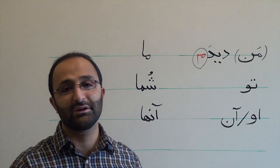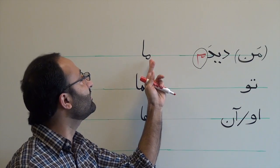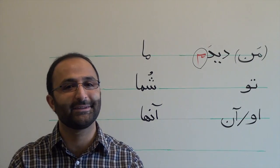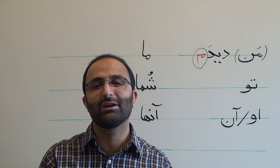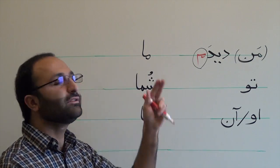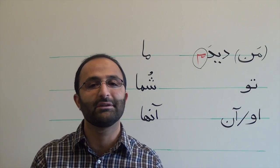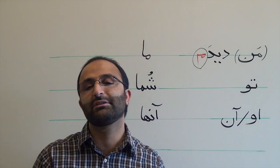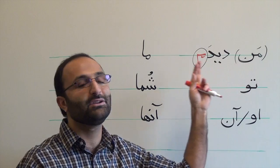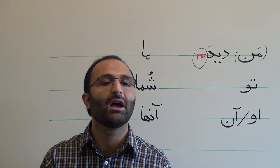Another thing about subjective pronouns is the pronoun 'ma.' If you have a Persian friend, you will see that he uses 'ma' a lot — more than enough. The reason is that in Farsi, using 'ma' instead of 'man' is the sign of humbleness. So many times in Farsi, people refer to themselves using 'ma' instead of 'man.' Instead of saying 'man didam,' they say 'ma didim.' It is the sign of being humble.